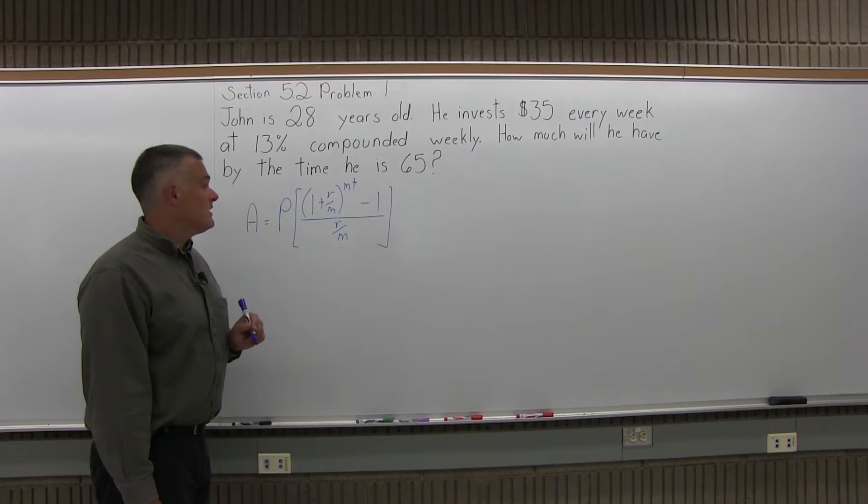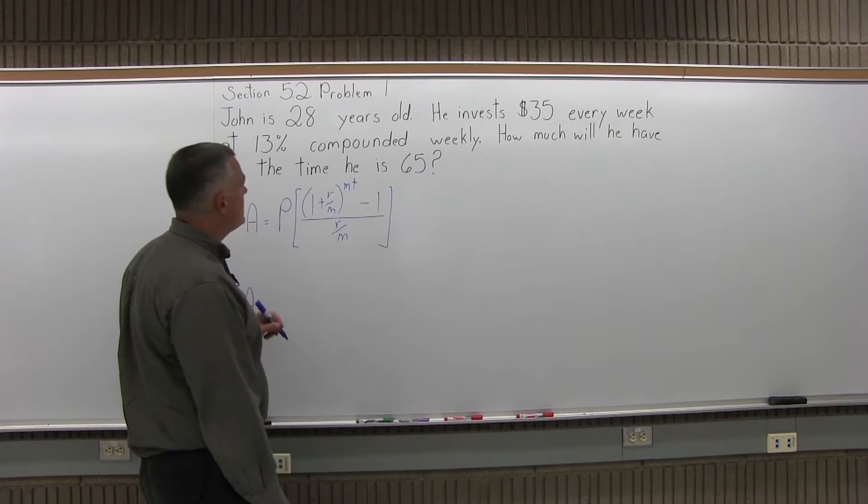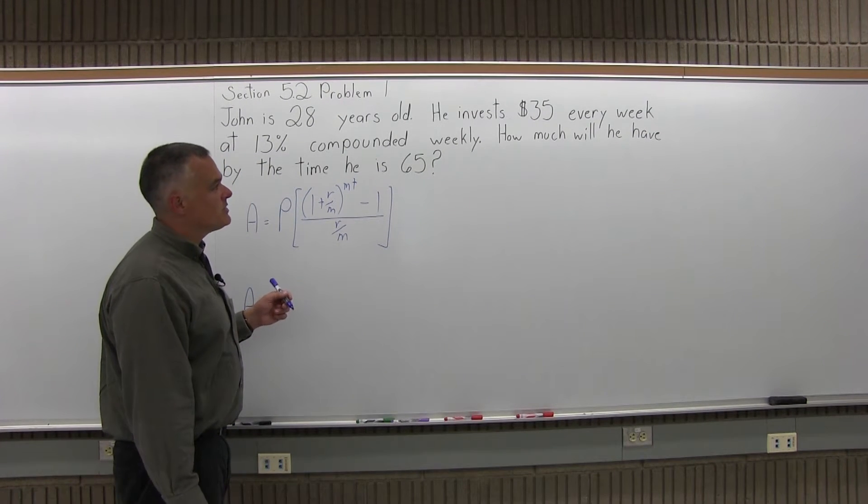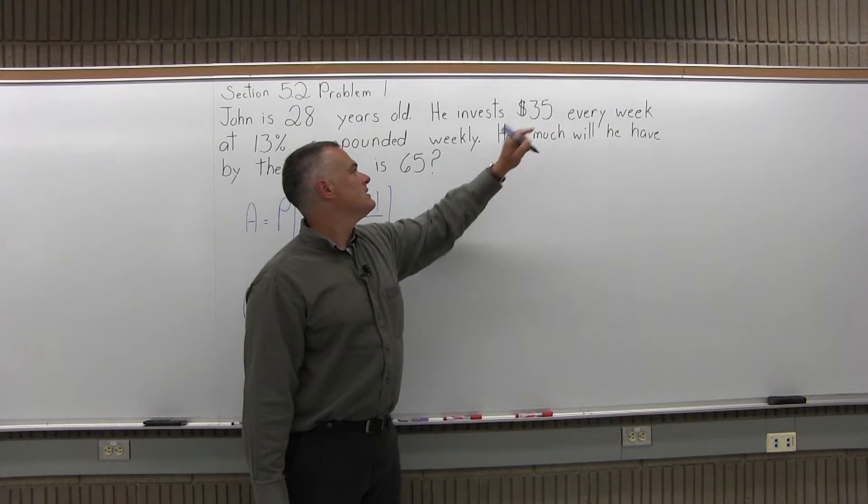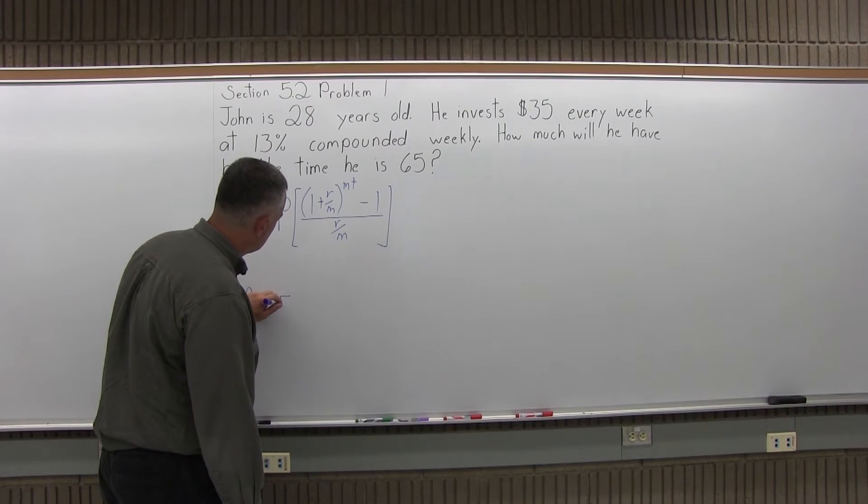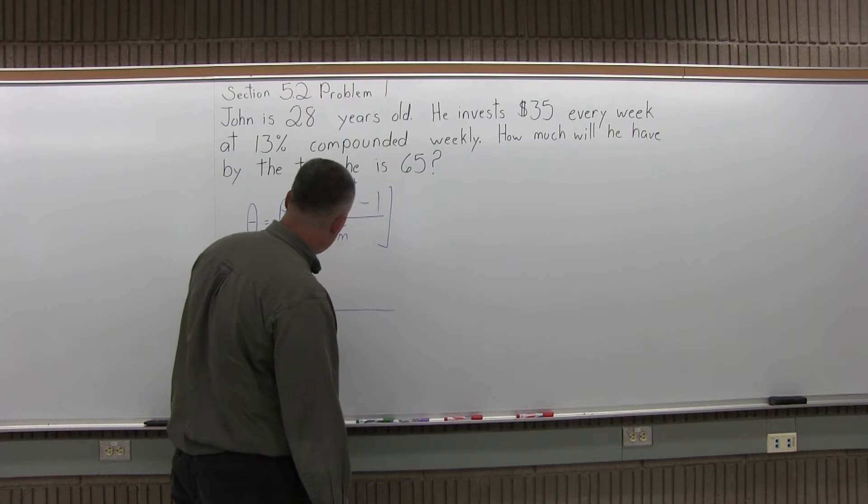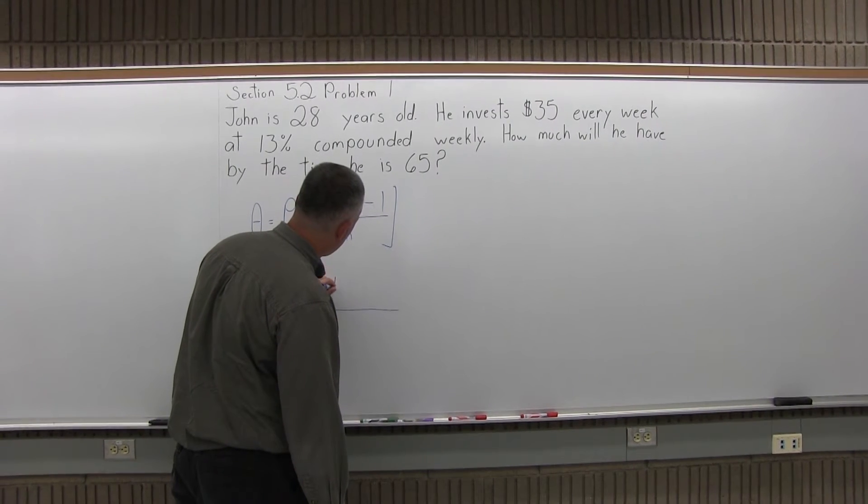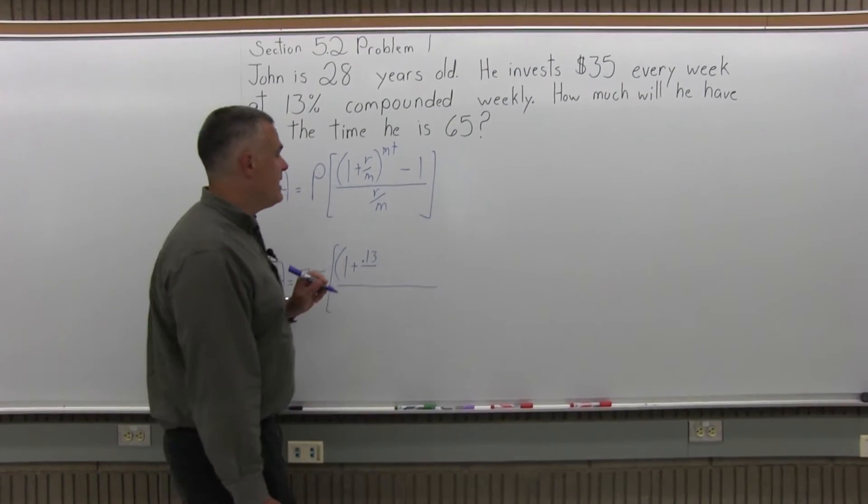So let's fill that in. A, the final amount, equals P. Now P is not really for principle, you can think of it that way, it's for period rent, it's how much you save on a regular basis. And it's the $35. And in the brackets, in the top we're going to have in parentheses 1 plus r over m, so that's 1 plus r, the rate as a decimal is .13, you have to write it as a decimal.